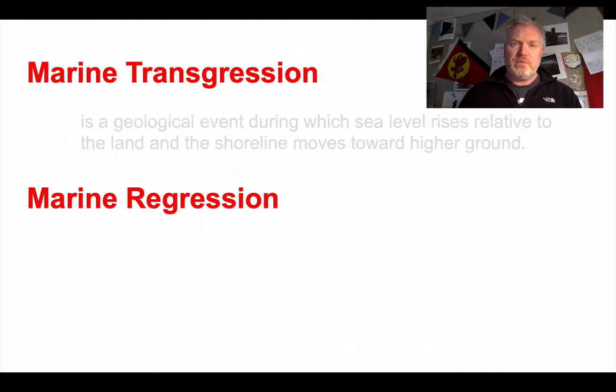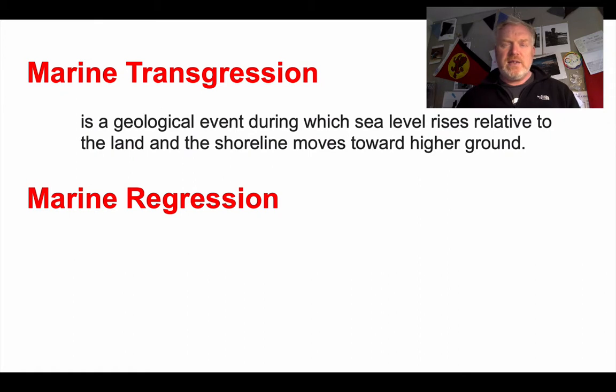Now marine transgression is an event where sea level rises. To transgress means to cross. So this is where the sea is crossing land. Sea level rises and it covers up what was low-lying land. And the coastline moves inland towards higher ground.